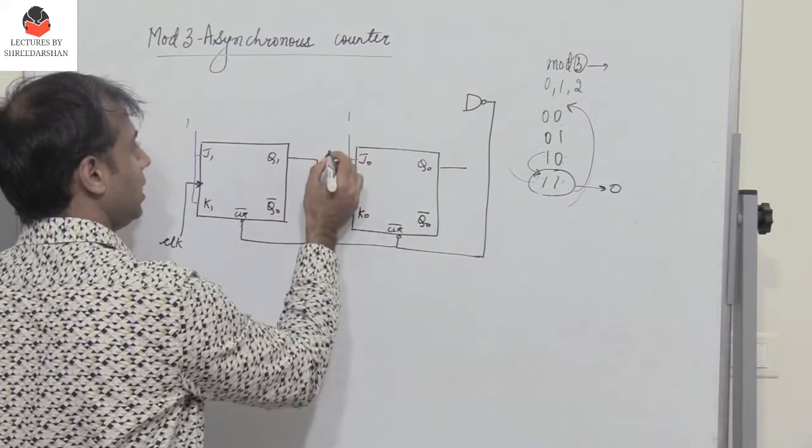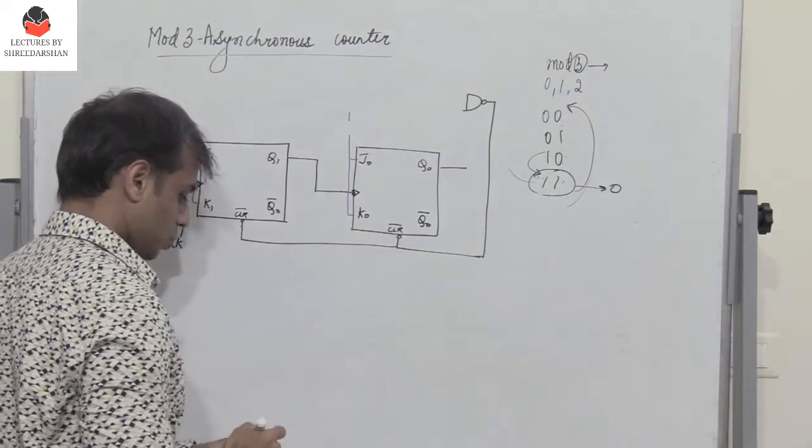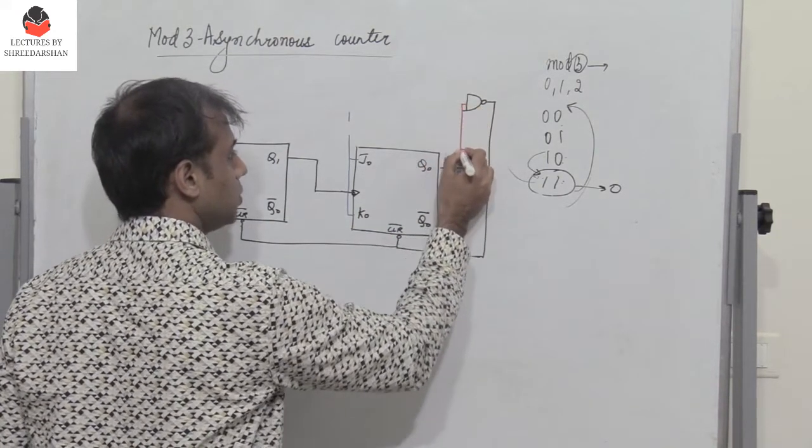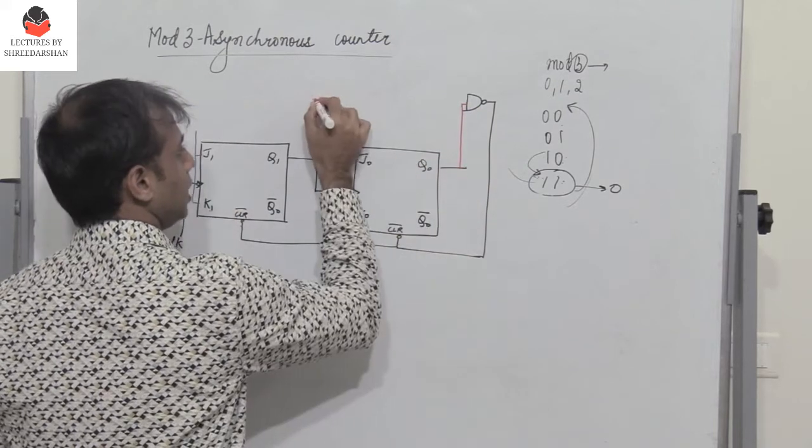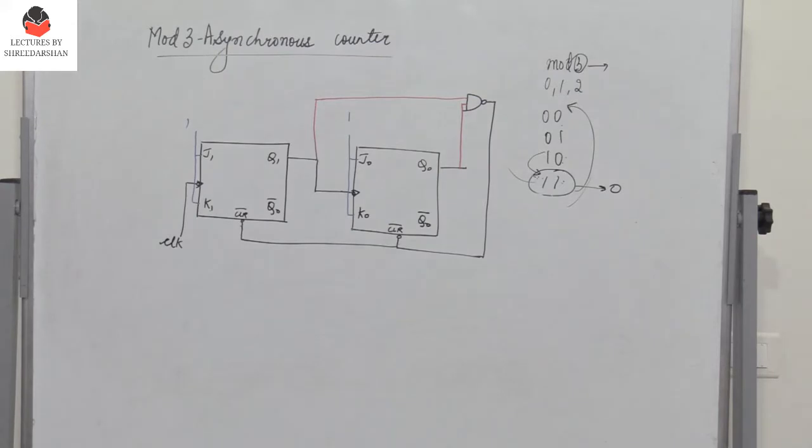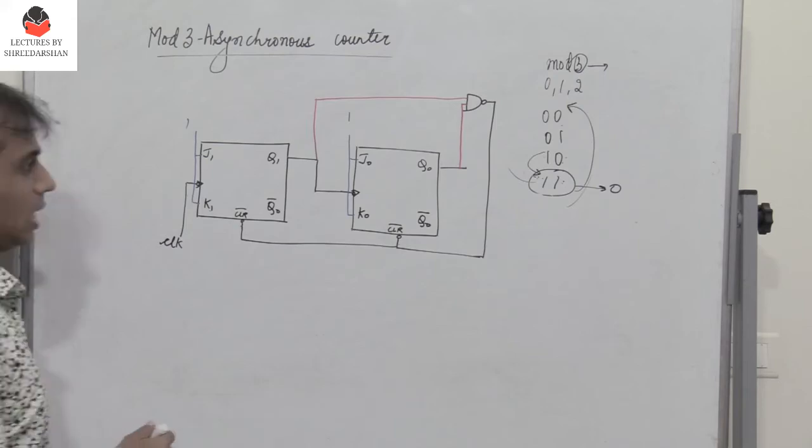I give output q1 as well as q0 as inputs to this two-input NAND gate. Q1 and q0 are given as inputs to this two-input NAND gate, and this output is given as input to clear.